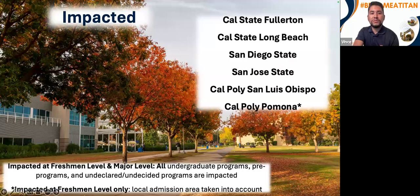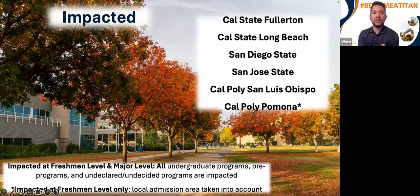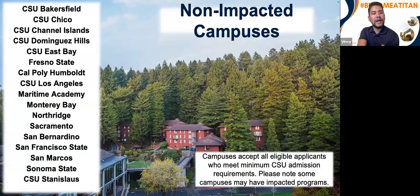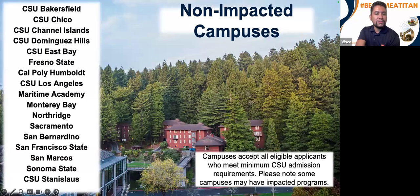The impacted campuses are Cal State Fullerton, Cal State Long Beach, San Diego State, San Jose State, and Cal Poly San Luis Obispo. Cal Poly Pomona is impacted at the freshman level only within the local admission area. All other campuses listed are impacted at all levels. There is also a list of non-impacted campuses — essentially those are programs and campuses that are not impacted.